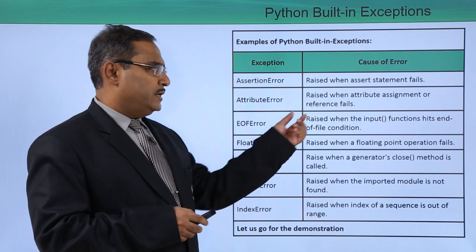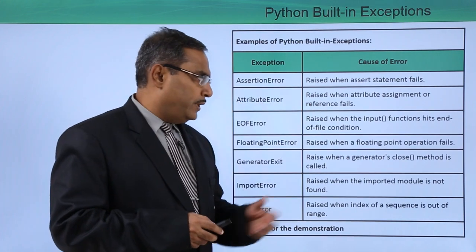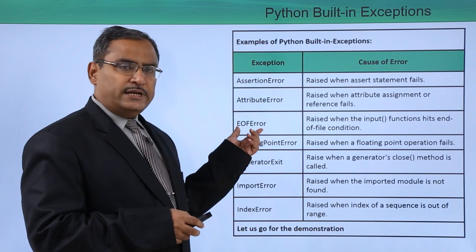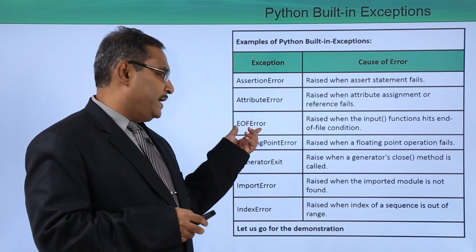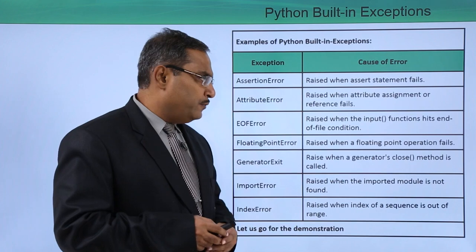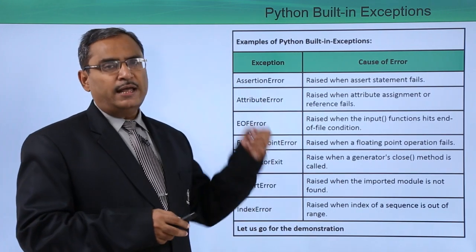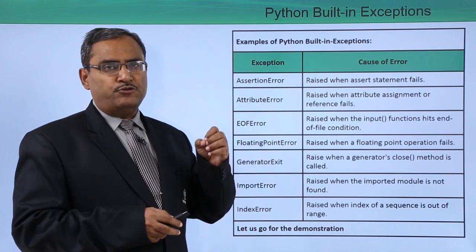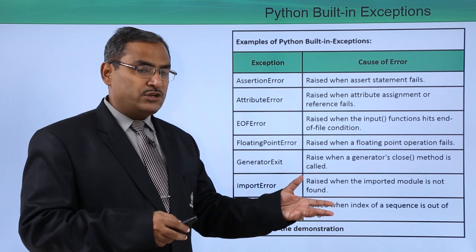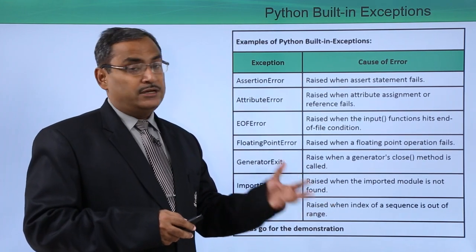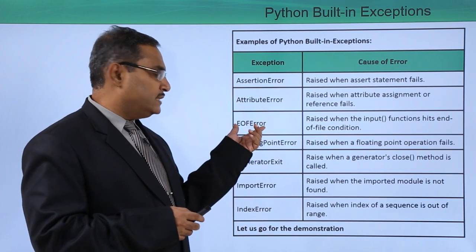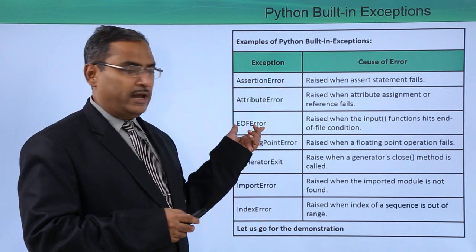Next is the AttributeError — raised when attribute assignment or reference fails. Next is the EOFError, that is the end-of-file error. Raised when the input function hits the end of the file while trying to read some content. In that case, the file has been exhausted and the EOFError exception will be raised.